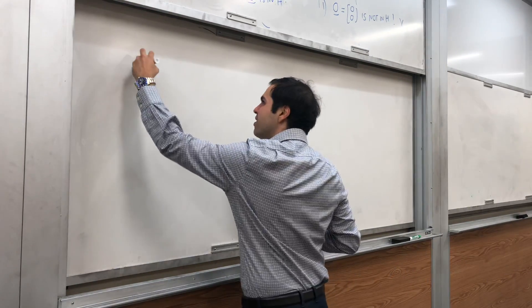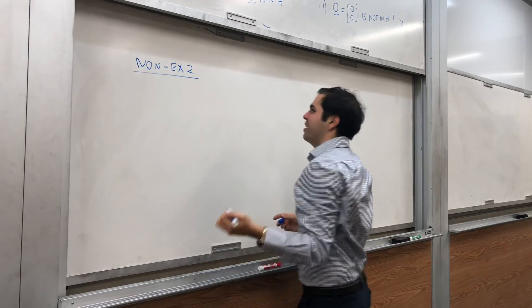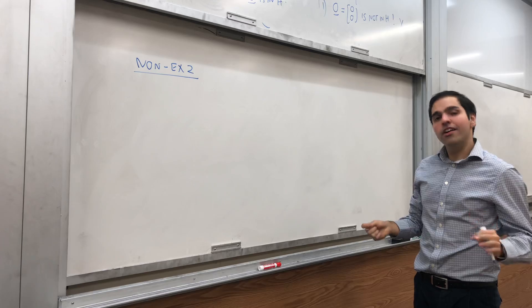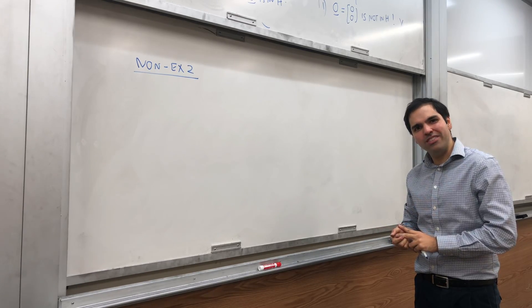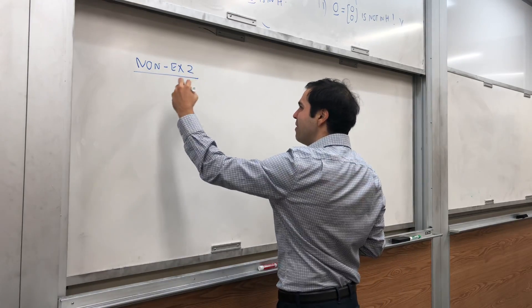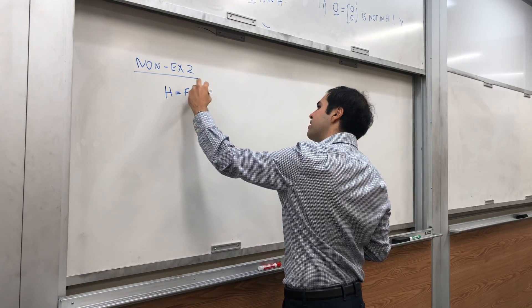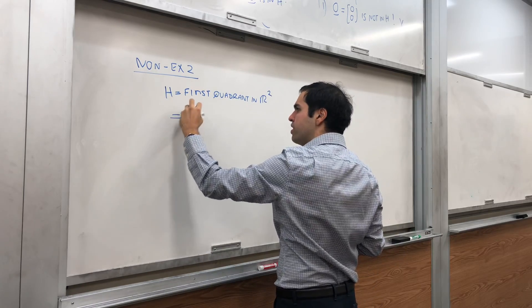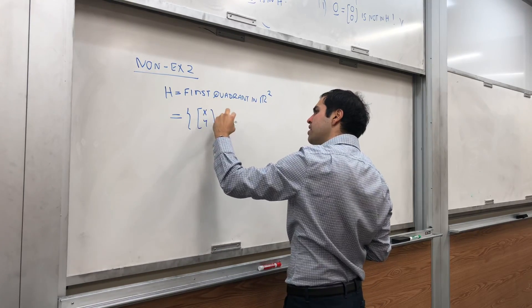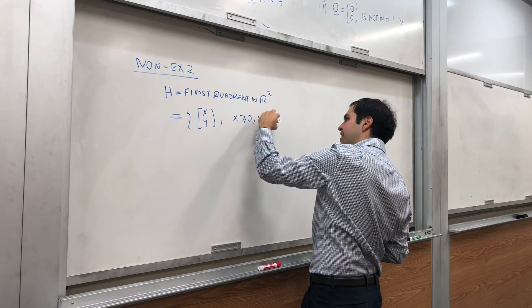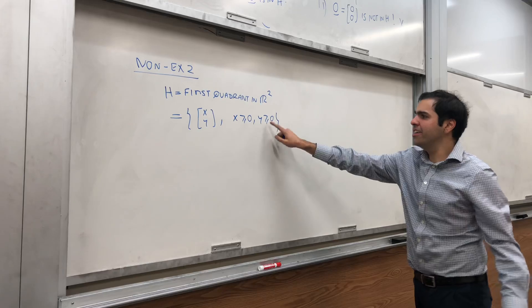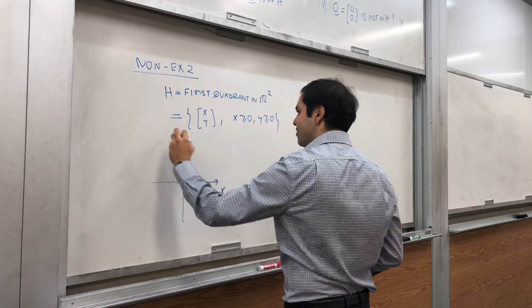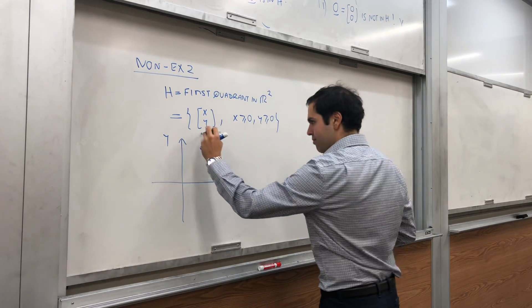All right. Next non-example. Okay, well, that was easy. The zero vector is not in it. Let me show you now a proper case where the first two properties hold, but the third one does not hold. Namely, let H be the first quadrant in R^2, which you can just write as a set of points (x, y) such that both x and y are non-negative. And by the way, it's important that we are greater than or equal. So, and again, what does that look like? It's literally the first quadrant.